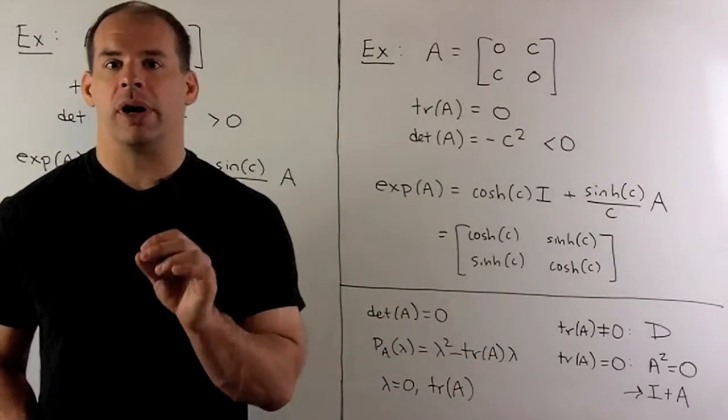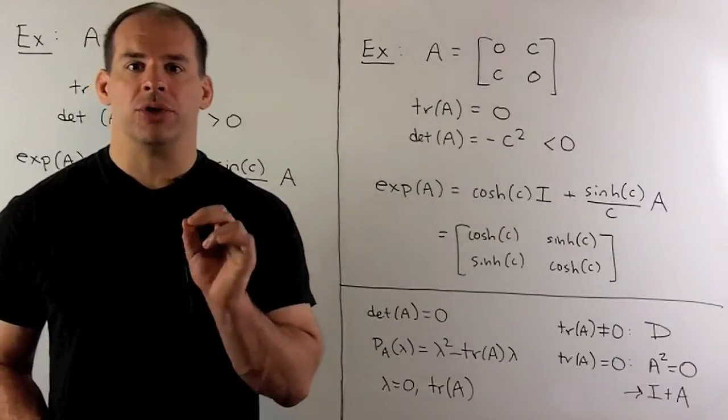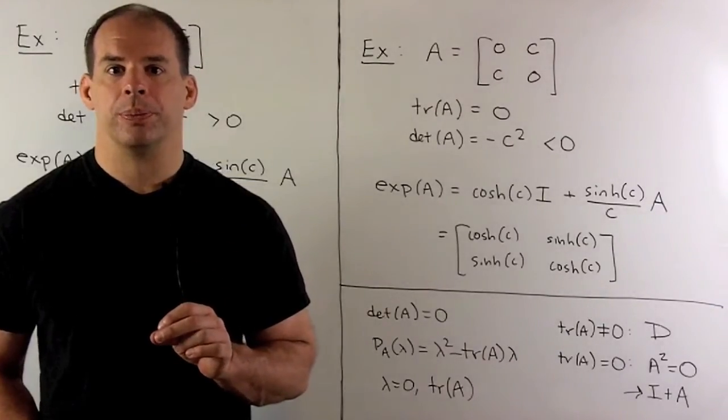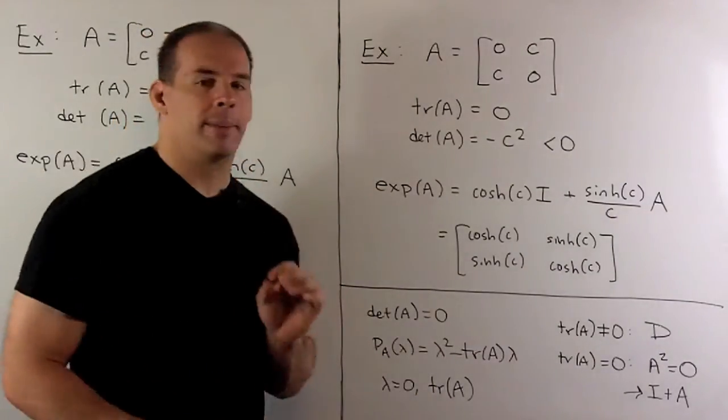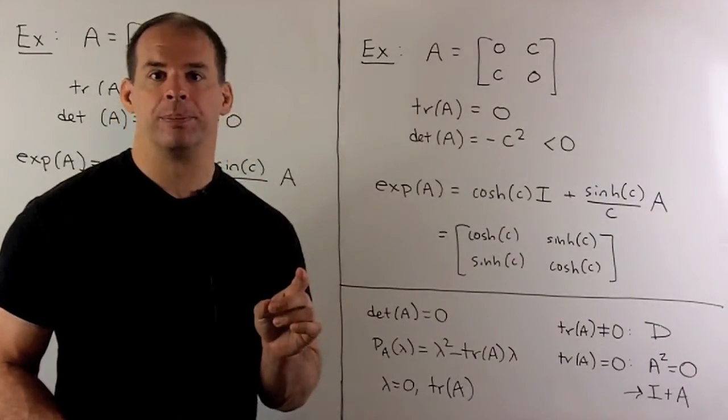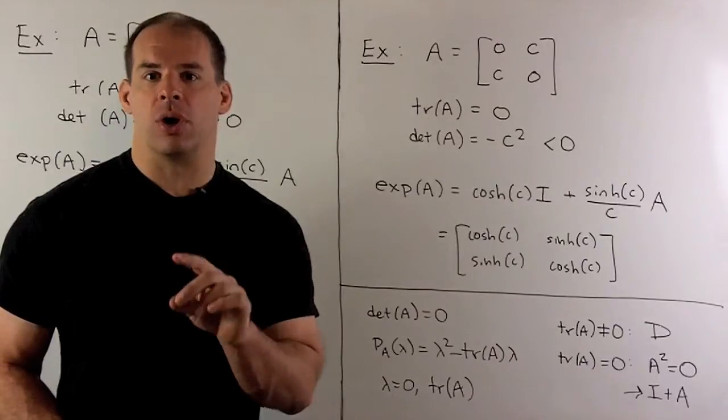Now, you may be wondering, what about the formula when the determinant is equal to zero? Well, in that case, the characteristic polynomial is going to be lambda squared minus trace of A times lambda. So the eigenvalues are zero and trace of A.